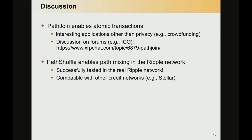Second, PathShuffle enables for the first time path mixing in the Ripple network. We have been able to perform a PathShuffle transaction — a proof of concept — in the current Ripple network, so it is fully compatible with the network today. And because the operations we need are only creating links and performing payments, we can use it also in other credit networks like Stellar.